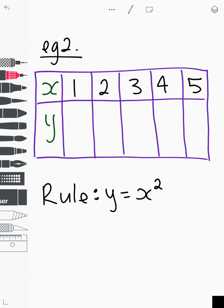Here, the rule is y equals x squared. So let's start with the first column there. The first column says that x equals 1, so in order to find out y, y equals 1 squared. And if we do 1 squared, we get that the answer is 1.